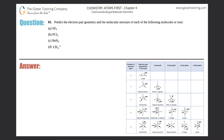Number 81: predict the electron pair geometry and the molecular structure of each of the following molecules or ions. First things first — in this whole chapter, everything basically comes down to Lewis structures. There's no exception here. If you want to find the electron pair geometry and molecular structure, you need to first draw a correct Lewis structure. If you get the Lewis structure incorrect, you'll likely get the electron pair geometry and molecular structure incorrect as well. If you're not comfortable with Lewis structures, go back to question number 40.